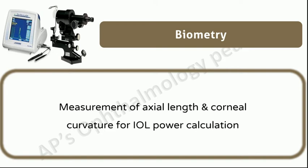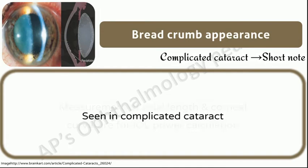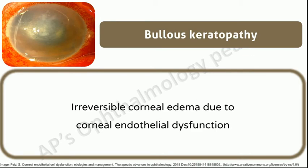Biometry: measurement of axial length and corneal curvature for IOL power calculation. Breadcrumb appearance: seen in complicated cataract.